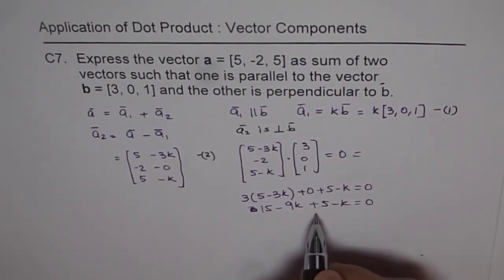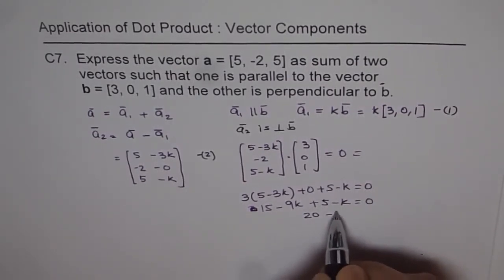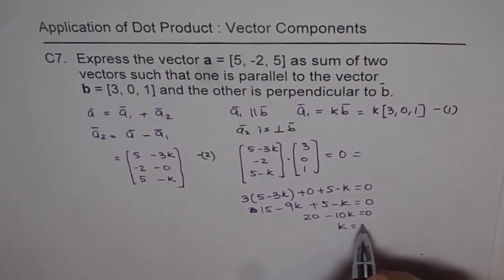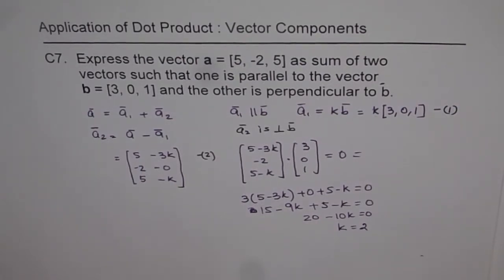Which is 15 + 5 is 20 minus 10k equals 0, and that gives us k value as 2. So we get k as 2.